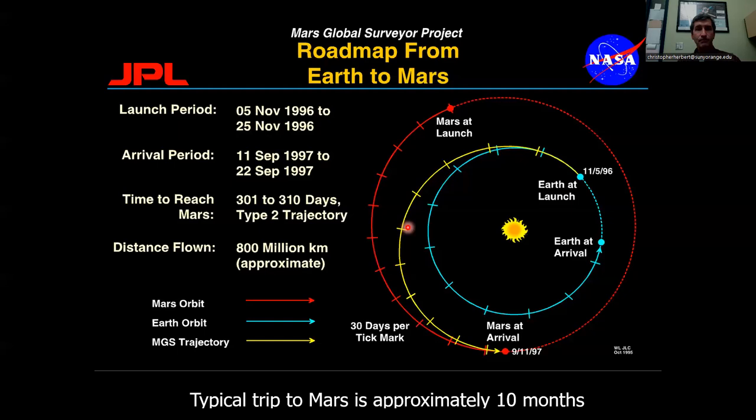Here's the trip that Mars Global Surveyor took. It was launched in 1996, so a human mission would be very similar to this. Launched in November 5, 1996, and it didn't arrive until September November of the following year. So a significant amount of time spent in space. Not quite a year, but during this journey, obviously, the astronauts are exposed to a lot of radiation, and you can't go on a diet for a year where you don't eat any food. You need to either bring all your food along, or you need to grow the food while it's going there.